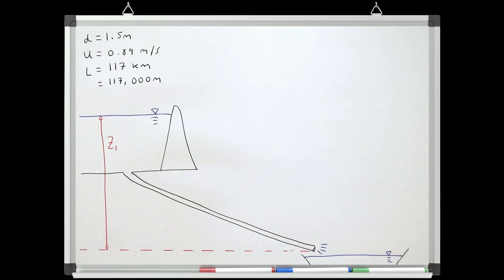As this is a gravity fed system, we know that the 0.89 meters per second of velocity in the pipe is being driven by the difference in elevation between the water surface of the reservoir and the outlet pipe. So let's see if we can work out what that elevation needs to be to give us a velocity of 0.89 meters per second.